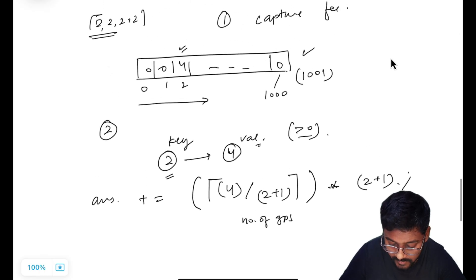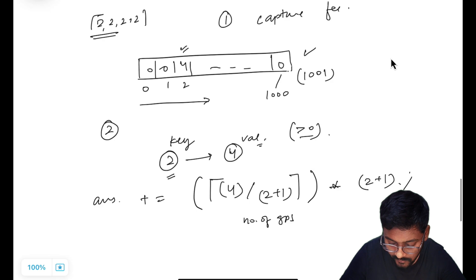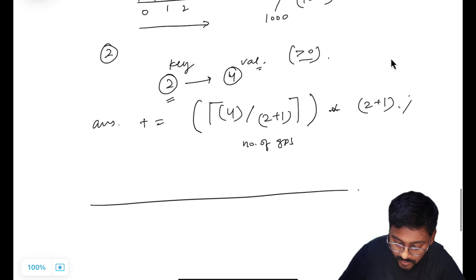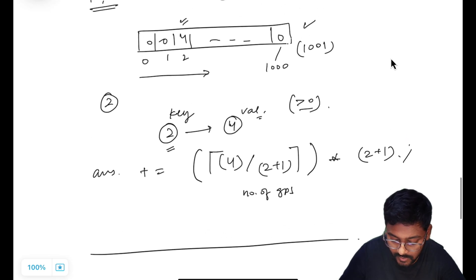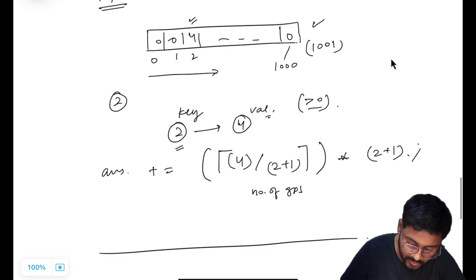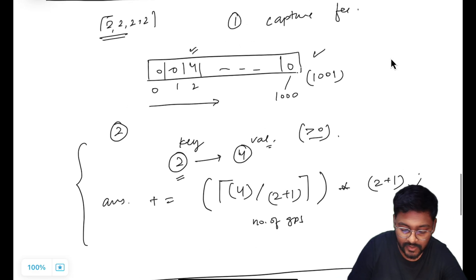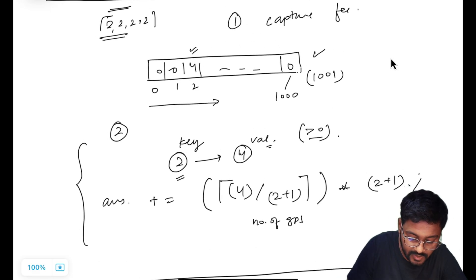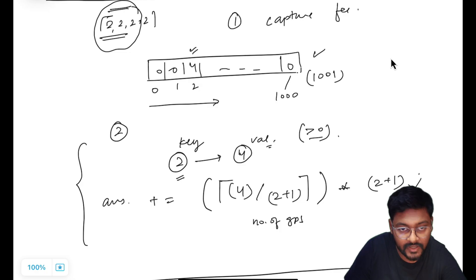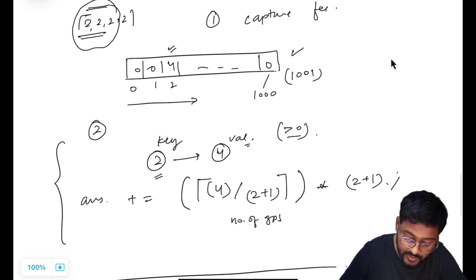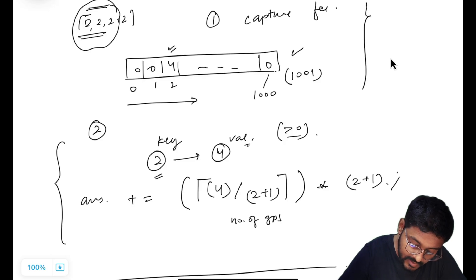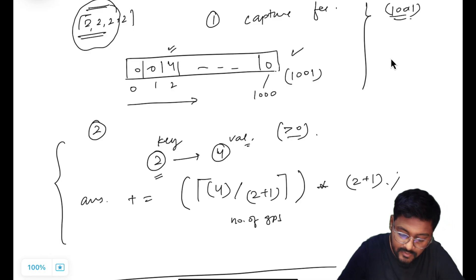This is done for every frequency where the value is greater than zero — meaning for every key present in this hash table. That's all we do in this problem. We go greedy by just assuming that rabbits giving the same answer are from the same group. Now let's look at the time and space complexity.